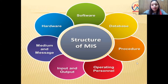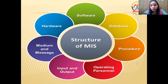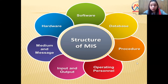This is the basic structure of the MIS. MIS is a huge process in which there are lots of capabilities and applications included: software, hardware, database, procedures, operating personnel, input, output, and medium and message. With the help of software, we can manage the data. With the help of database, there are lots of database software in which we can manage our data, like MS Access, Oracle, DBMS, and many others. What procedures we use to store information, what operating systems we use to store data, and by which medium we can deliver our data.